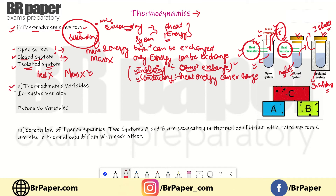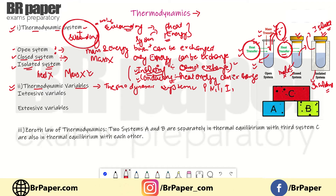Next are thermodynamic variables. To describe a thermodynamic system, we need some variables. What are these variables? They are pressure, volume, temperature, and internal energy. These variables are required to explain the thermodynamic system, and they are called thermodynamic variables.